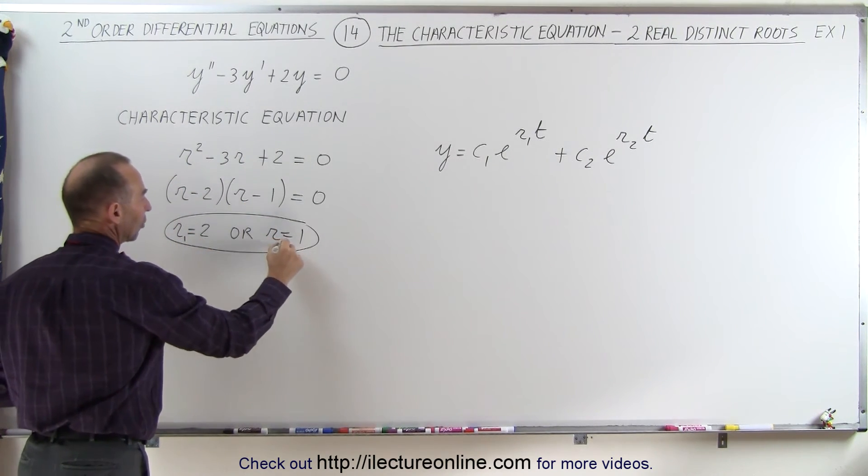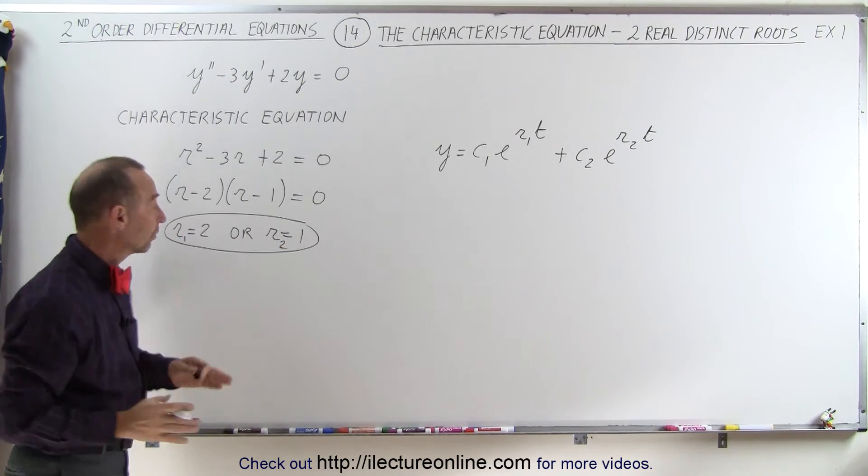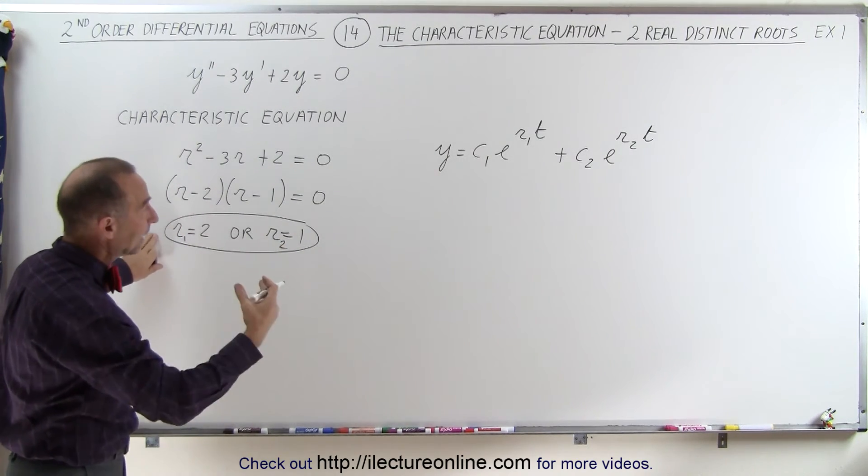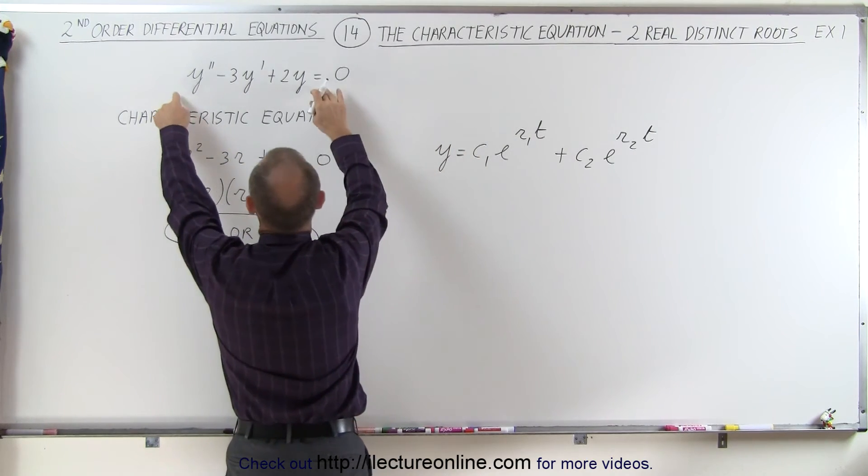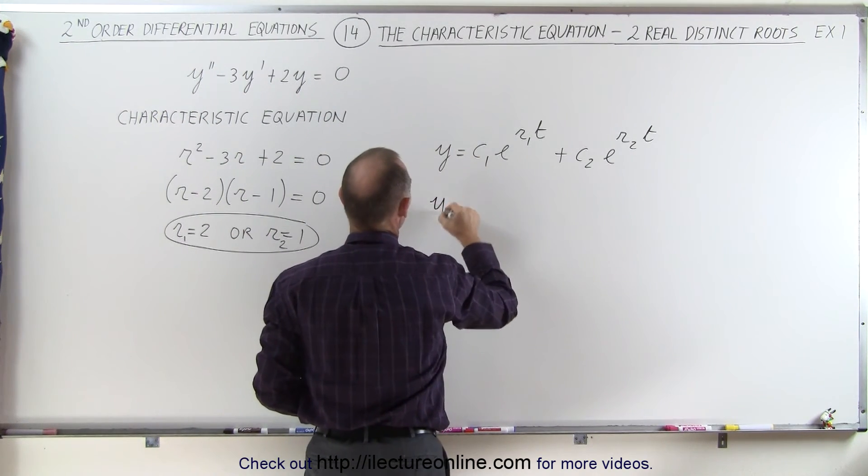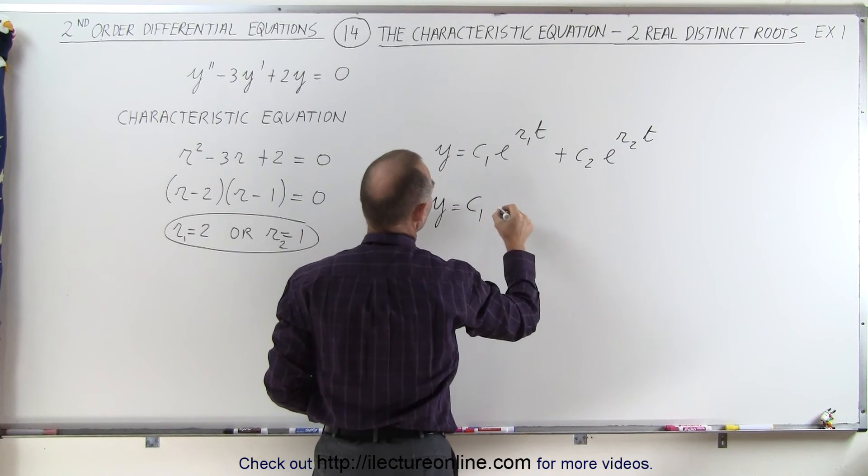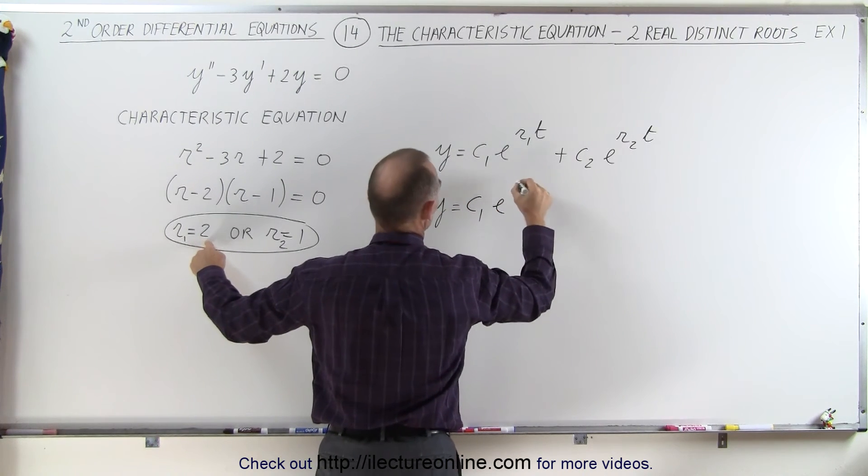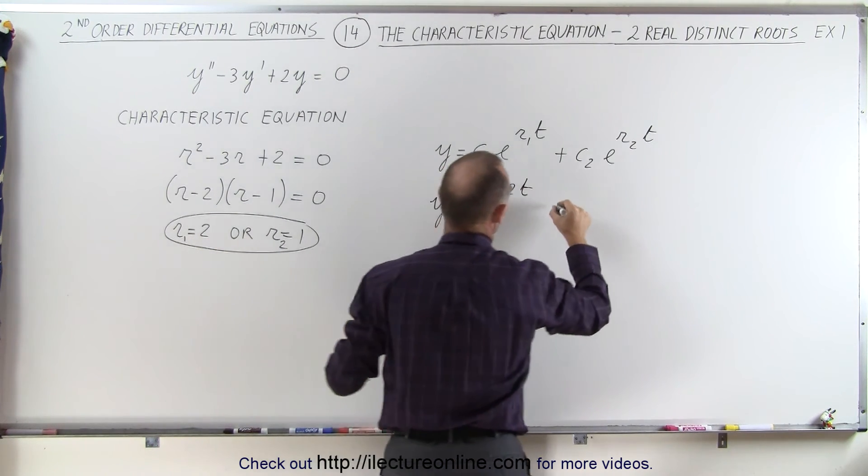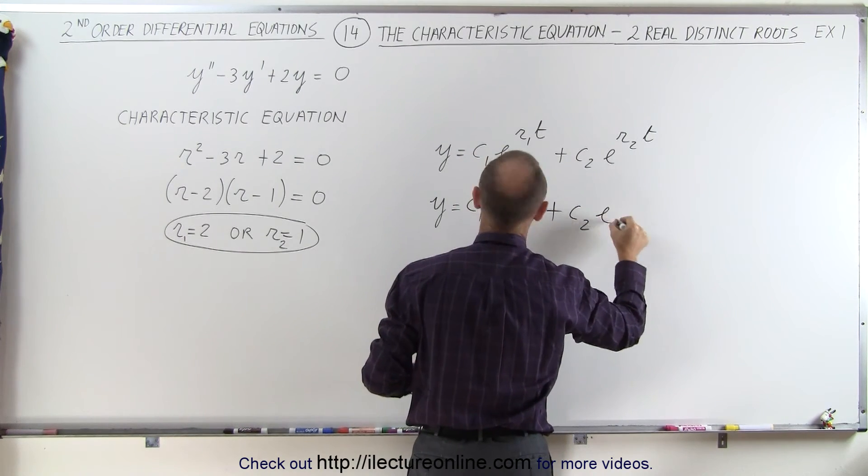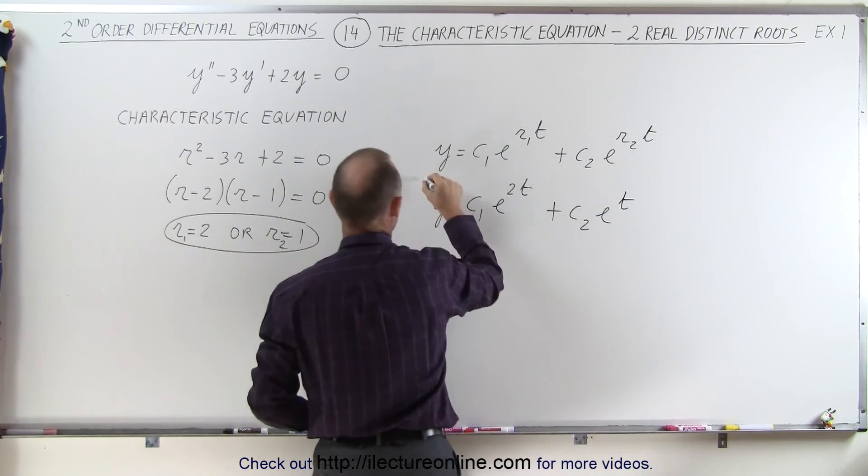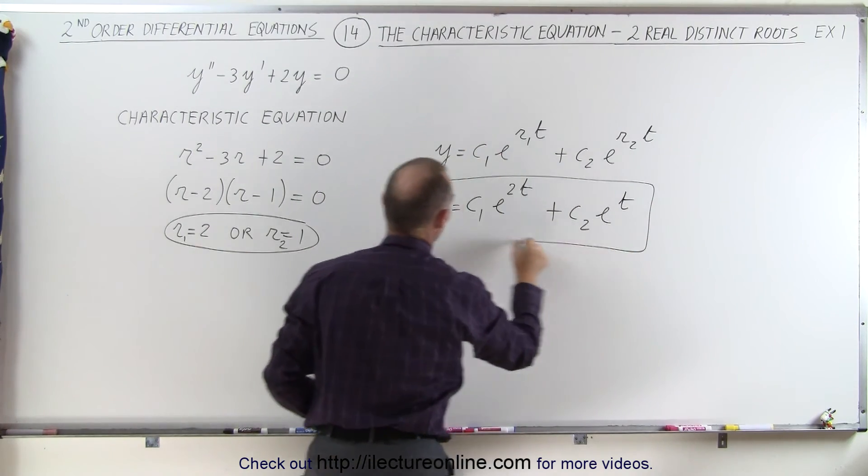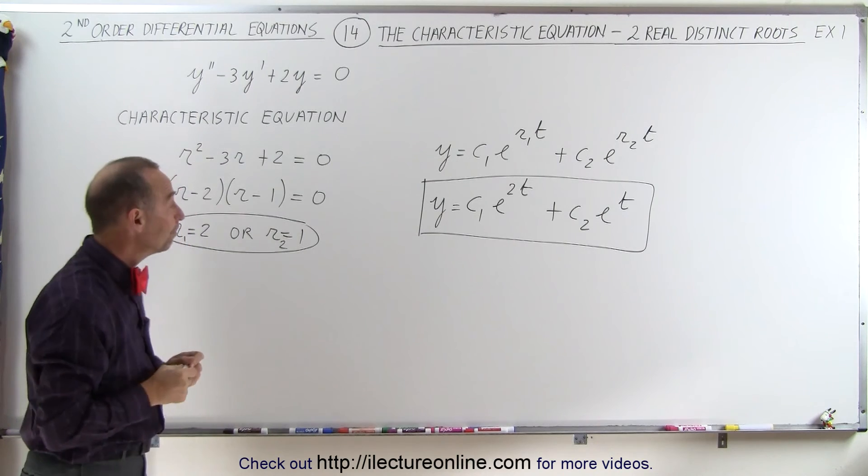So with r₁ = 2 and r₂ = 1 as the two roots of the characteristic equation, the general solution to this differential equation can be written as y = c₁e^(2t) + c₂e^t. And there's the general solution to the differential equation.